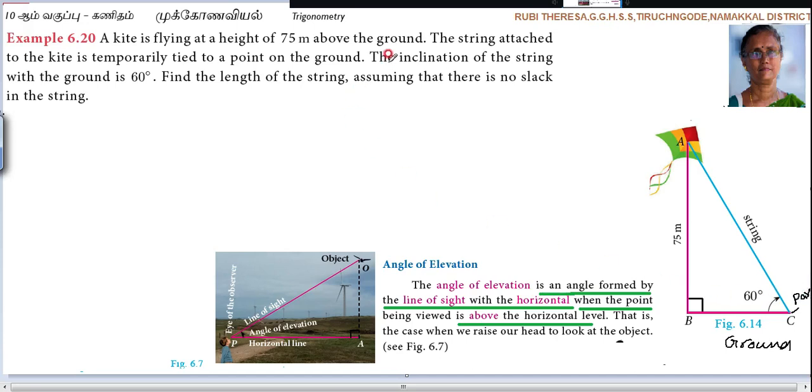The inclination of the string with the ground is 60 degrees. So the angle of elevation is 60 degrees. Then find the length of the string, assuming that there is no slack in the string. That means it should be tied tightly. You have to consider the string as a straight line.